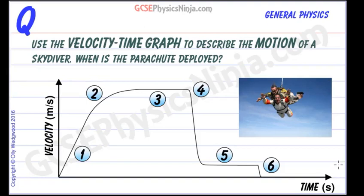Here we have a velocity-time graph of a skydiver making a jump and we're asked to describe the motion of the skydiver, when is the parachute deployed, and when does it open.